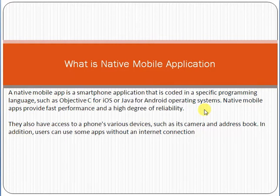Native mobile applications provide fast performance because they reside on the operating system of a mobile device. That is why the degree of reliability is very high, because all the processing is completed on the existing operating system, whether it's Android or whether it's iOS.